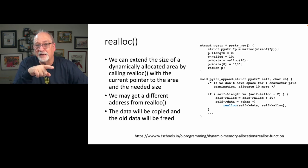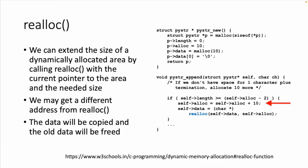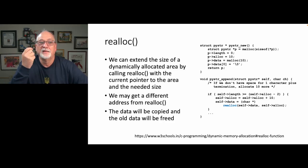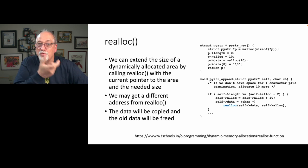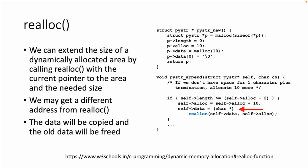We take self alloc, which is 10, and add 10 to it so self alloc becomes 20. Then we set self data to realloc of the old self data with 20 characters. Realloc takes a pointer and a new size and gives back a new pointer. It may have to move the data in memory, so you can't assume self data is the same before and after. But if it had to move the data to find a 20-character slot, it will have copied all 10 original characters. That's why you see self data on both sides — in the call to realloc and as the assignment target.